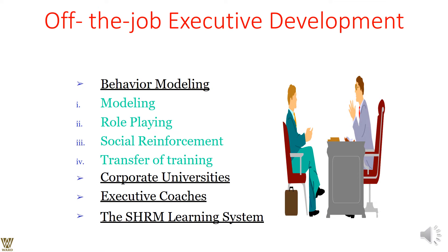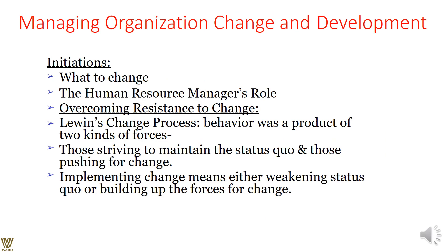Off-the-job executive development is all about behavior modeling — how we model it out, what role plays are involved, social reinforcement, social theory, and social acceptability. Transfer of knowledge and skills is a must. Executive coaches and other learning systems also need to be considered. We will now talk about managing organizational change in relation to required development.